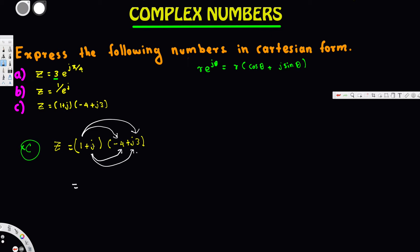If we expand this: 1 times -4 is -4, 1 times j3 is +j3, then j times -4 is -j4, and j times j3 — since j² equals -1 — gives us -1 times 3, which is -3. So we get -4 + j3 - j4 - 3.